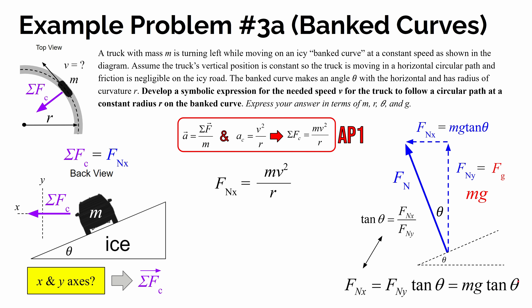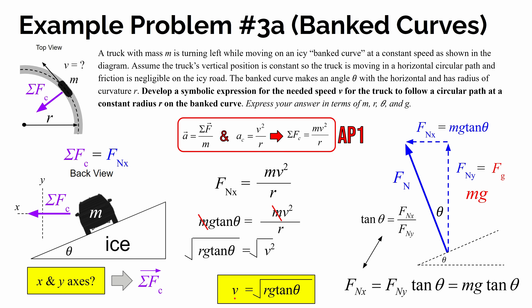Substituting MG·tan(θ) for the X component of the normal force: MG·tan(θ) = M·V²/R. Dividing both sides by M cancels it out, then multiplying both sides by R gives: R·G·tan(θ) = V². Taking the square root of both sides, the needed speed is V = √(R·G·tan(θ)). I hope this has been helpful in thinking through the physics of banked curves, whether you're solving quantitatively or symbolically.